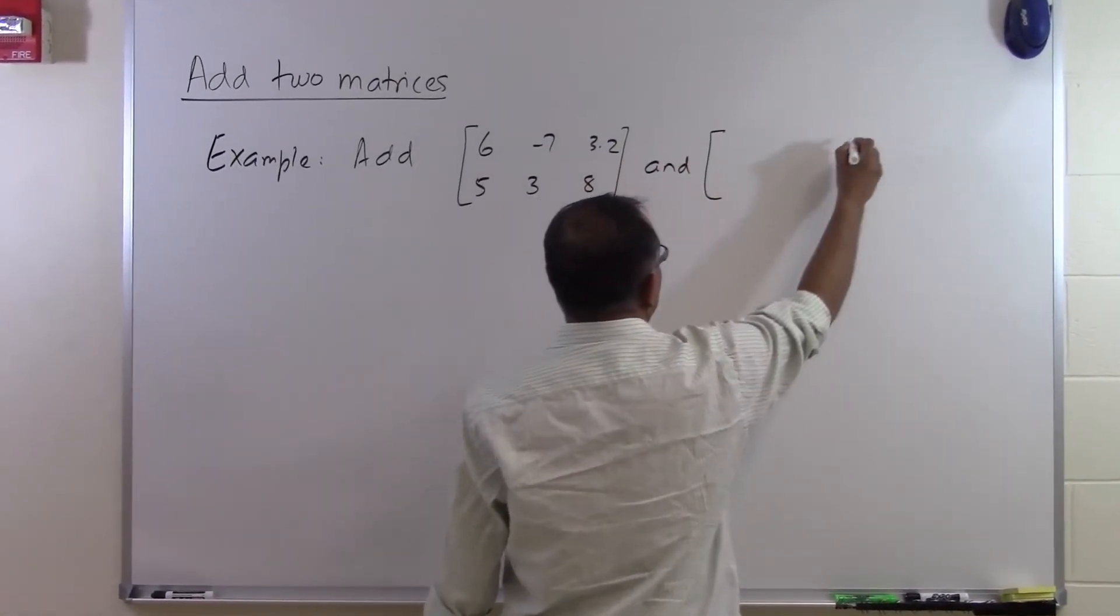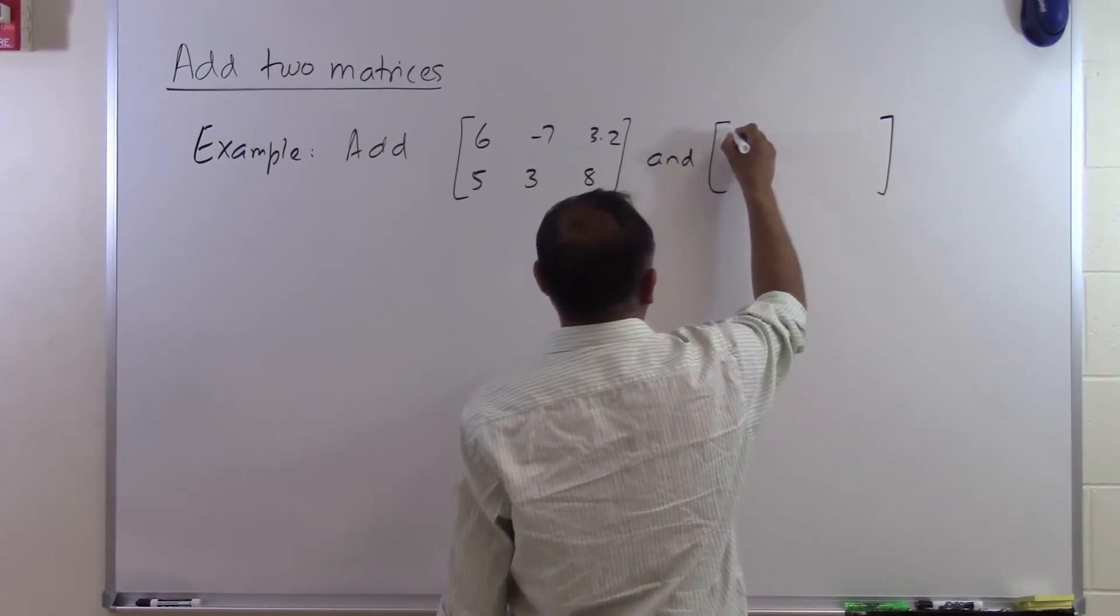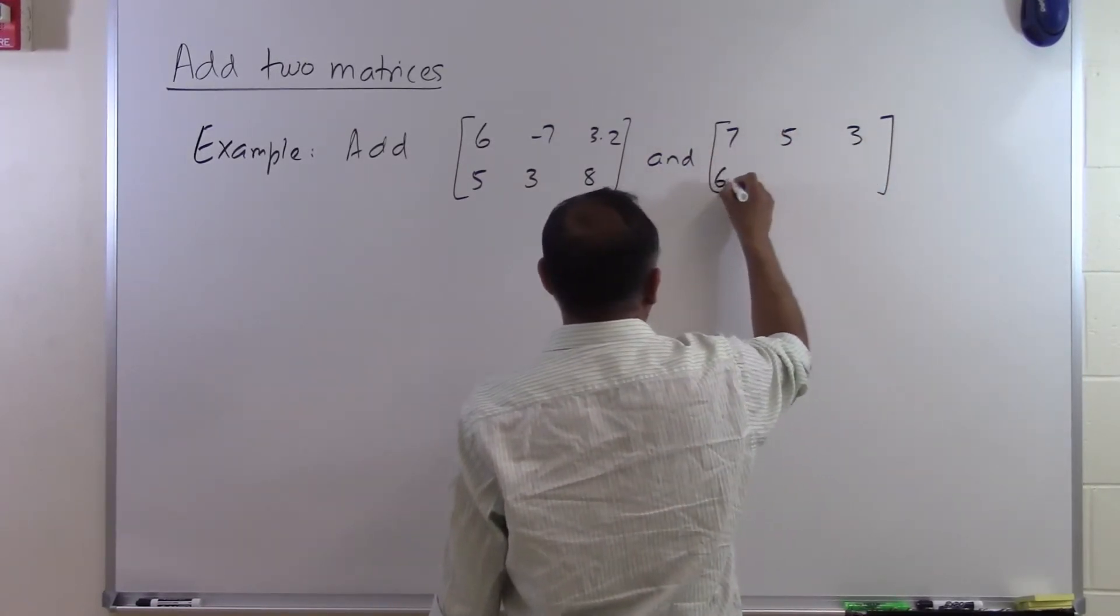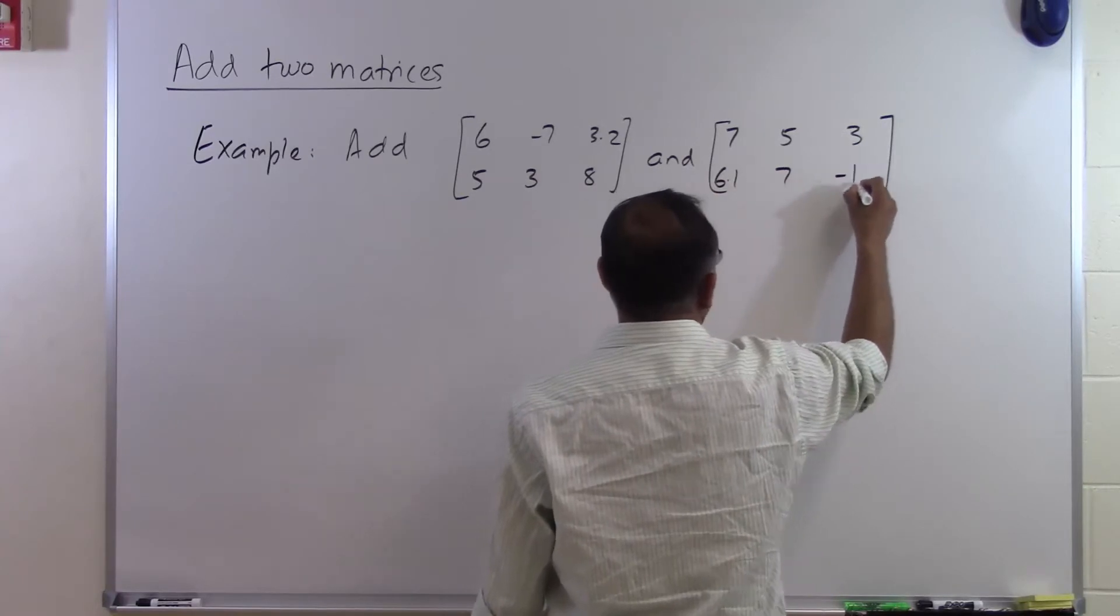And another matrix: 7, 5, 3, 6.1, 7, -1.1.